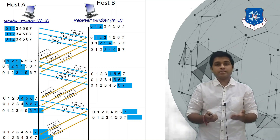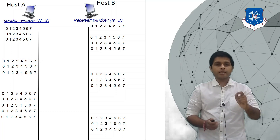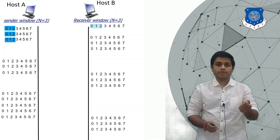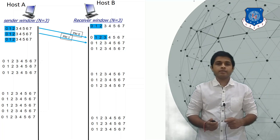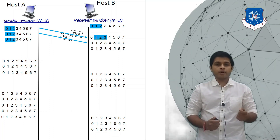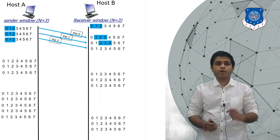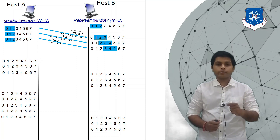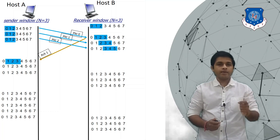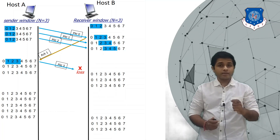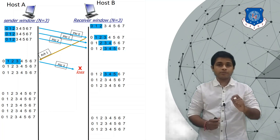Now let's see what happens when a packet is lost in the channel. We take the same example: Selective Repeat protocol with sender's window and receiver's window both of size 3. A will send packets, the window will slide, and after some time for received packet 0, B will send ACK 1. As A receives ACK 1, it knows packet 0 is delivered successfully, so the window will slide and A will send the next packet, packet 3. Suppose this packet is lost in the channel.